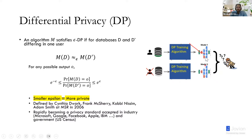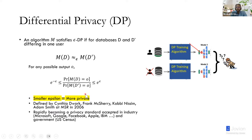More formally, since the training algorithm is randomized, it outputs a distribution of models rather than a single deterministic model. We say such an algorithm is epsilon differentially private if the output distributions on adjacent databases are epsilon-close — meaning the ratio of probabilities of outputting any particular model is bounded by e to the epsilon and lower bounded by e to the minus epsilon. The smaller the epsilon, the more private the algorithm is. If epsilon is zero, it's perfectly private — it doesn't matter whether the user's input is there or not, it outputs the same distribution of models.